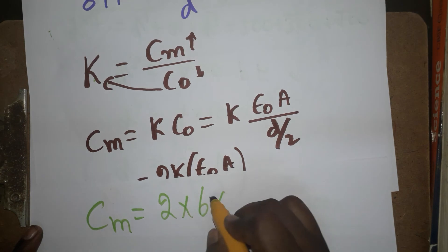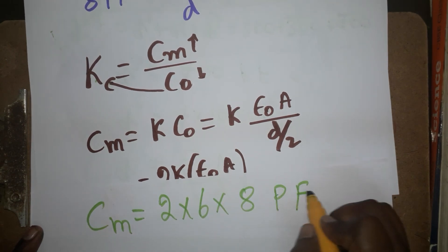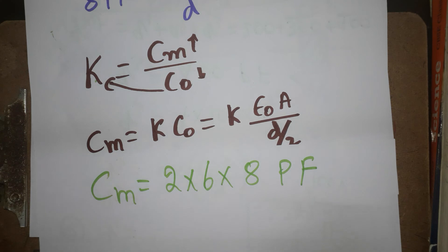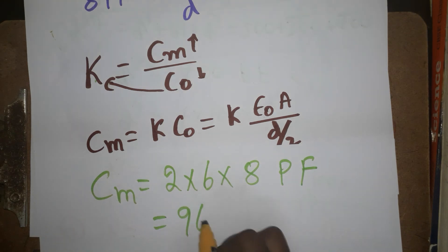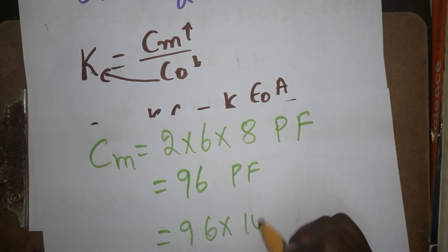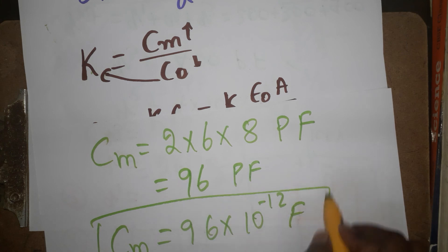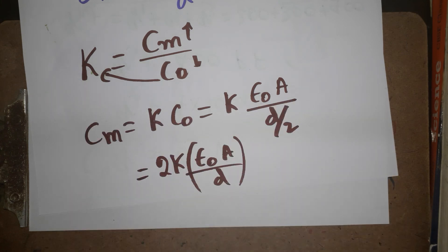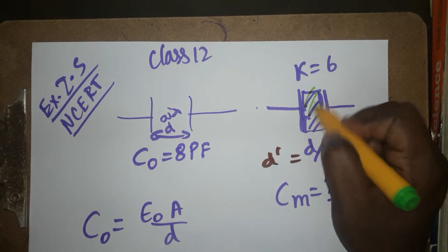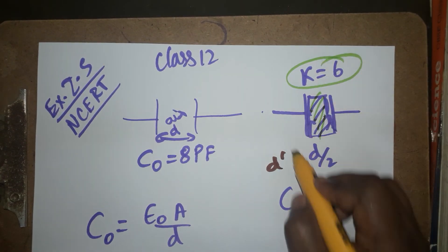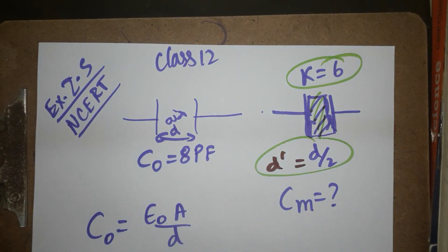So the capacitance in the medium is 2 × 6 × 8 picofarad = 96 picofarad. Note that 1 picofarad equals 10⁻¹² farad. Therefore, the capacitance of the capacitor in the medium, when a dielectric of constant 6 is placed and the distance is reduced to half, is 96 picofarad. Thank you for watching — please subscribe to the channel.